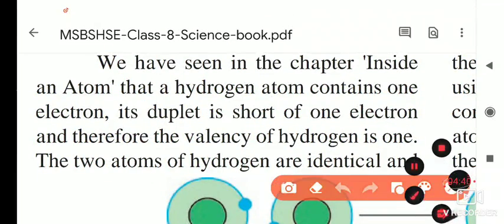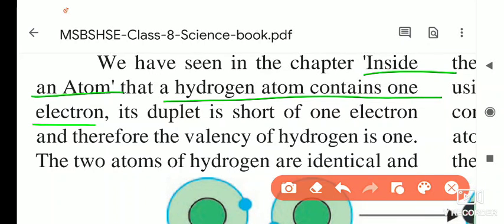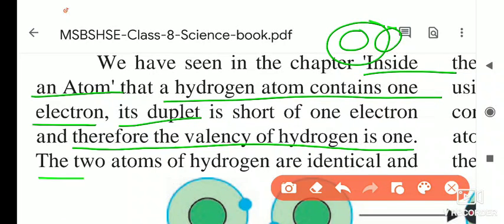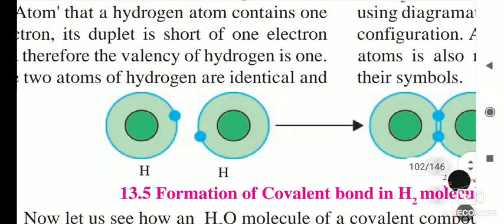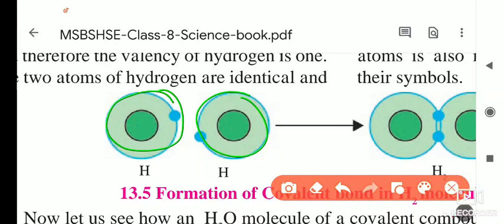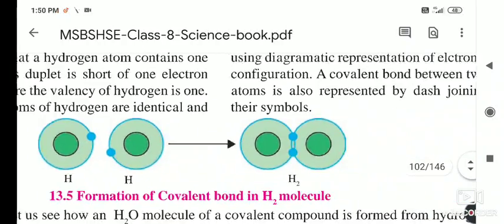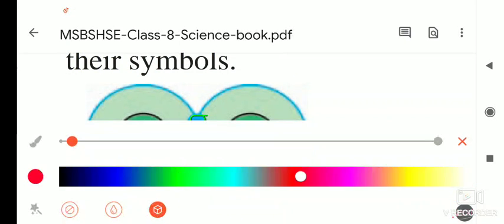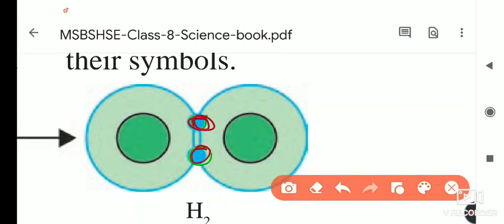As we have seen in the chapter on the atom, a hydrogen atom contains only one electron. For its duplet, the first orbit must contain two electrons to be stable. Hydrogen is short of one electron — it needs one more to complete its duplet. The valence of hydrogen is one. The two atoms of hydrogen are identical, having similar tendency — both are trying to be stable by completing their duplet. Therefore, they share their electrons with each other.